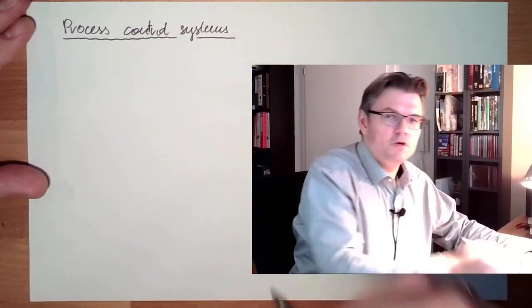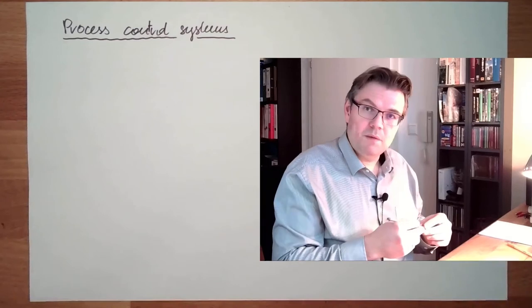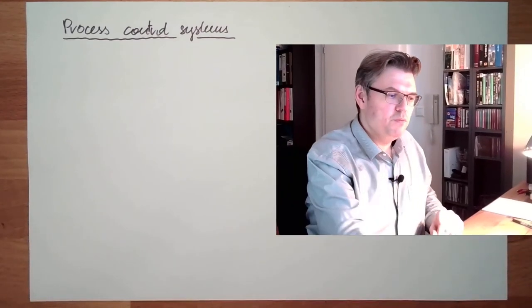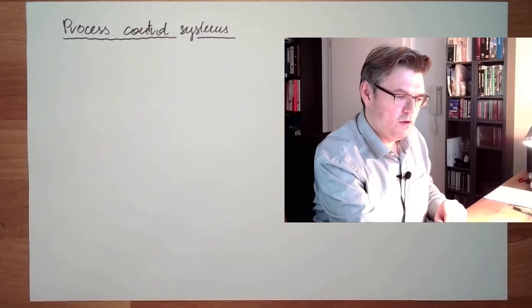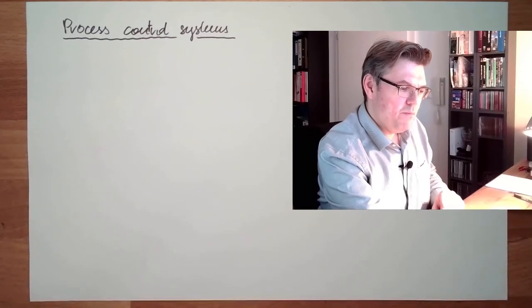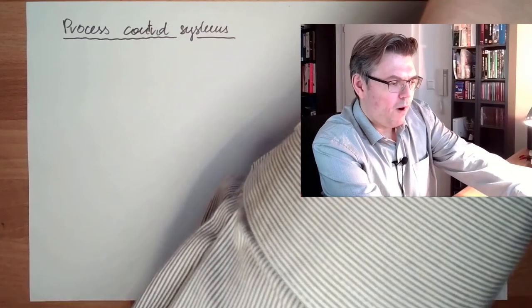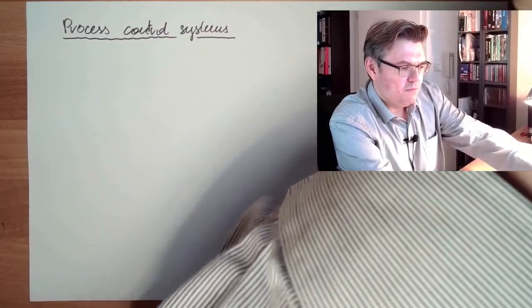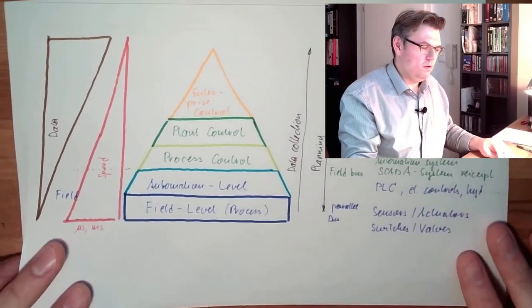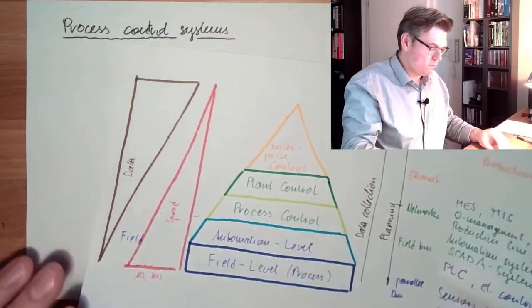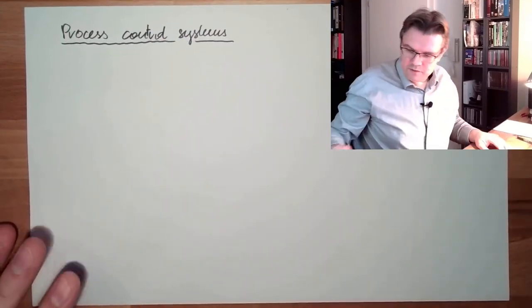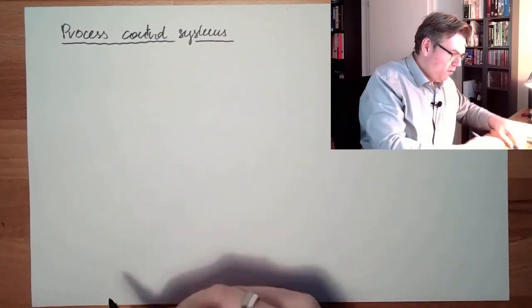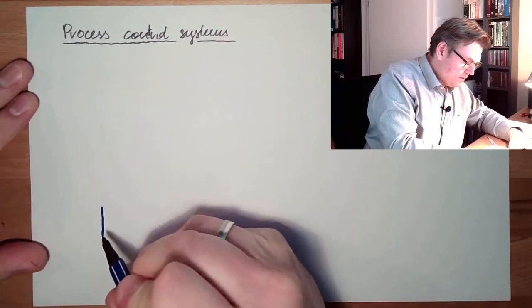A process control system consists of different parts. We had this automation pyramid - I'm pretty sure you have seen it quite some time. There is the field level with all the actuators and stuff.